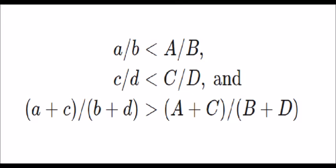The small letter a divided by small b is less than capital A divided by capital B. In this example, of course, A and B are some numbers. Now, see the second inequality: small c divided by small d is less than capital C divided by capital D.